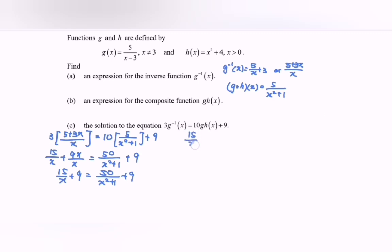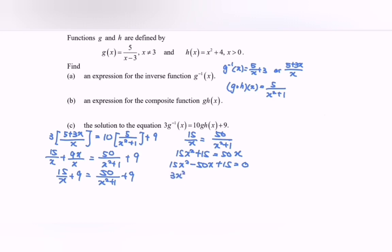Rewriting: 15 over x equals 50 over (x² plus 1). Cross-multiplying: 15x² plus 15 equals 50x. Rearranging: 15x² minus 50x plus 15 equals 0. Dividing by 5: 3x² minus 10x plus 3 equals 0. Factorizing: (3x minus 1)(x minus 3) equals 0. Therefore x equals 1 over 3 or x equals 3.